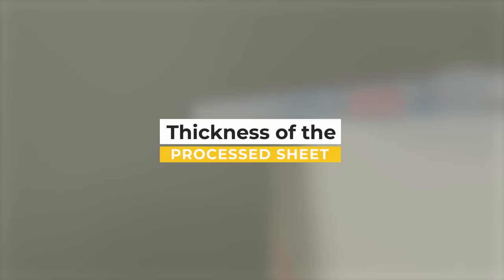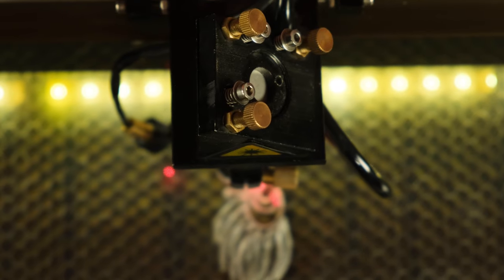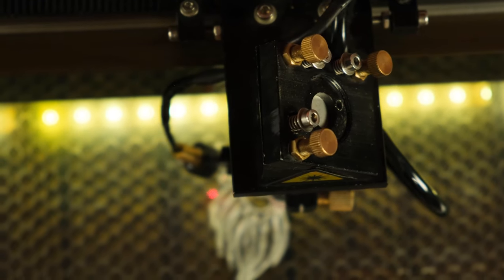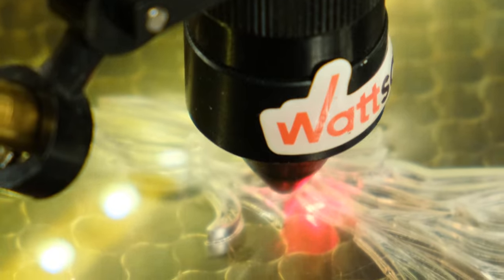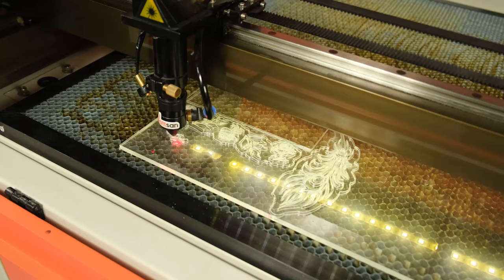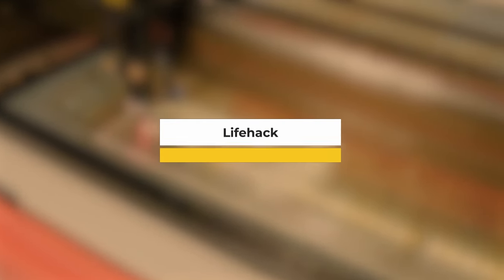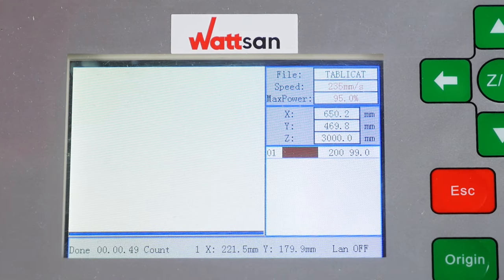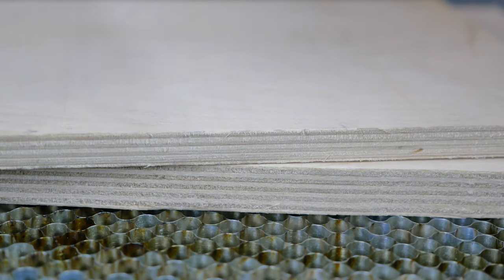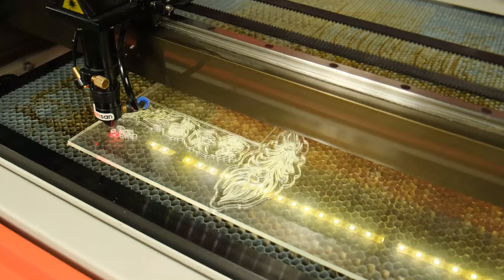Let's move on to the next point. Thickness of the processed sheet. One of the most significant factors, but it is in the last place of our list because it is premature to talk about the thickness of the material without deciding on the type of material. Attention, a little life hack from Verma. Let's make experts in the field of laser power selection for cutting plywood and acrylic out of you in 10 seconds.